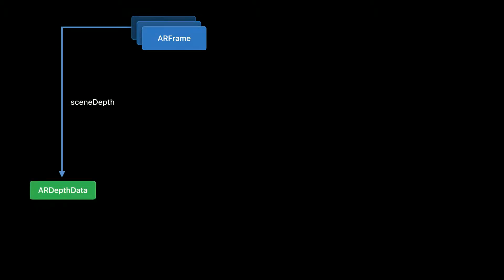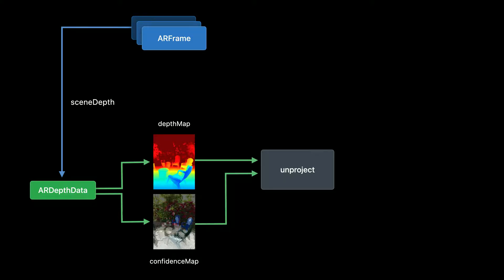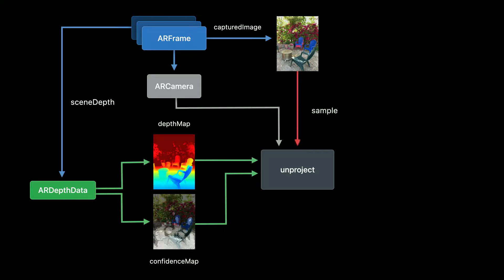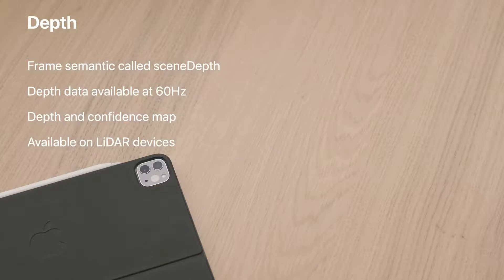For each AR frame, we access the sceneDepth property to get the ARDepthData object with depth and confidence maps. The key part of the app is a Metal vertex shader called unproject, which unprojects the depth data to 3D space using the camera's transform, intrinsics, and projection matrix. The shader also samples color from the captured image for each depth pixel, producing a 3D point cloud rendered using Metal.